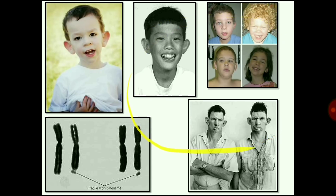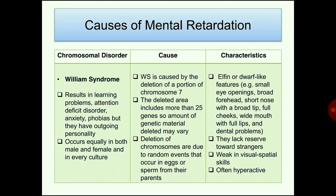Williams syndrome results in learning problems, attention deficit disorders, anxiety, and phobias, but affected individuals have outgoing personalities. It occurs equally in both males and females across every culture. The cause is deletion of a portion of chromosome number 7, including more than 25 genes; deletions occur due to random events in eggs or sperm. Characteristics include dwarf-like features, small eye openings, broad forehead, short nose with broad tip, full cheeks, wide mouth with full lips, dental problems, lack of reserve toward strangers, weakness in visual-spatial skills, and hyperactivity.